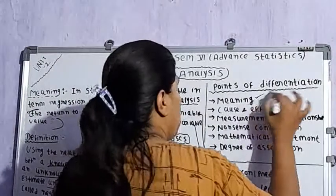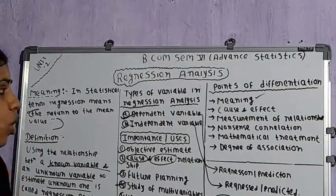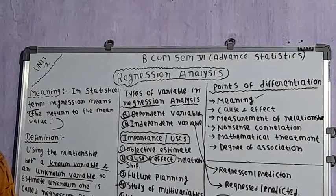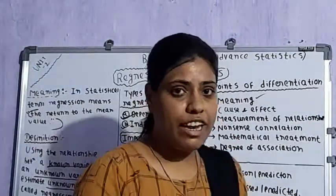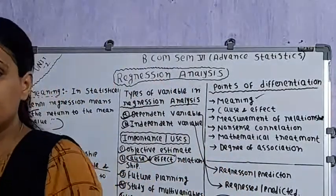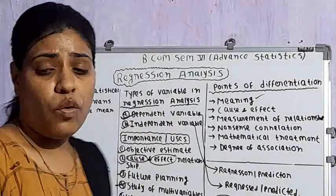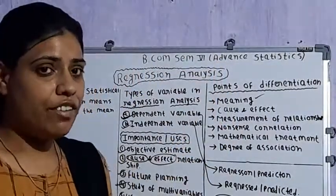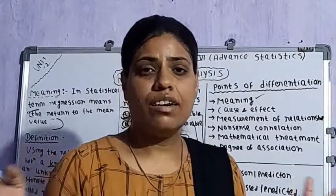Starting with meaning: correlation analysis refers to studying the relationship between two or more variables, whereas regression analysis means stepping back or returning to the mean value. In correlation analysis we study the relationship between variables, while in regression analysis we move backward and return to the mean value.